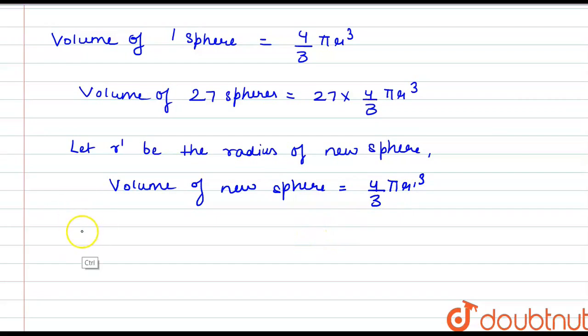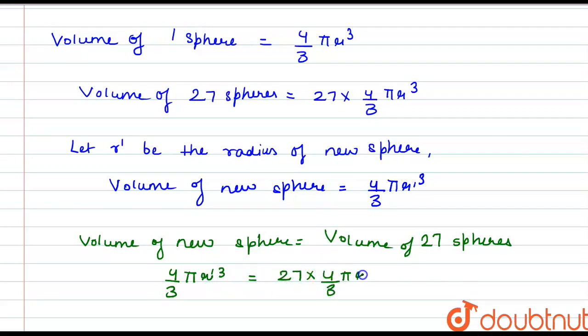Since the new sphere is recasted from the 27 old spheres, the volume of the new sphere equals the volume of 27 spheres. If we compare these, we have 4/3 π r'³ = 27 × 4/3 π r³. The 4/3 π cancels out from both sides.